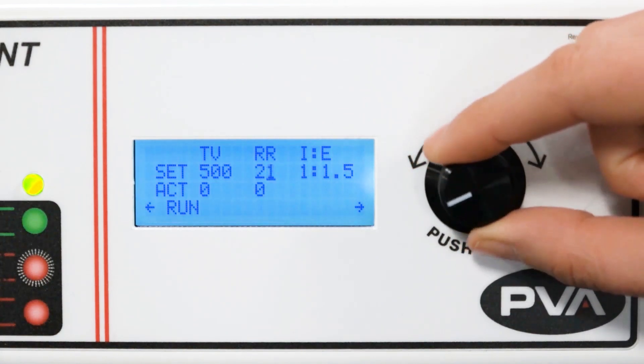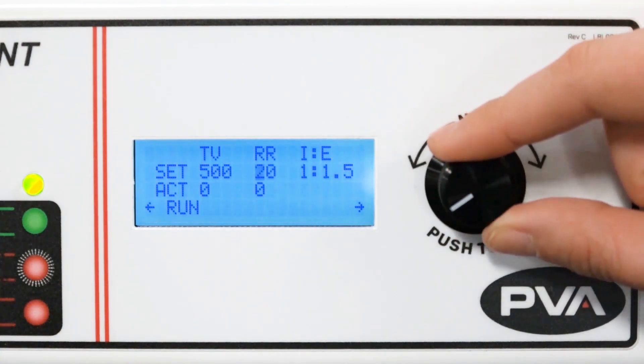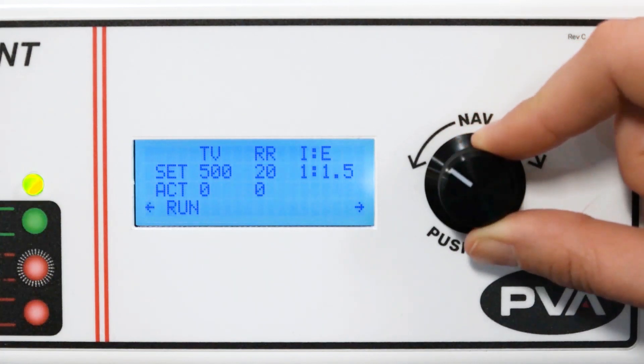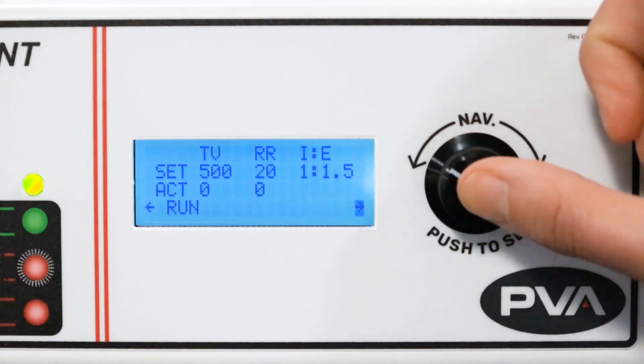If no settings are selected, the system will use the defaults. Once you have set the parameters, use the knob to navigate to the arrow and press the knob.